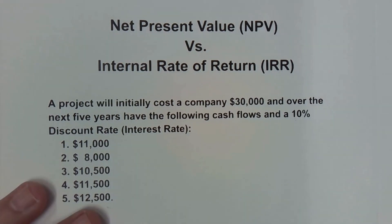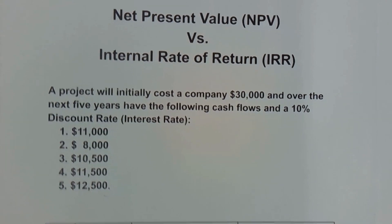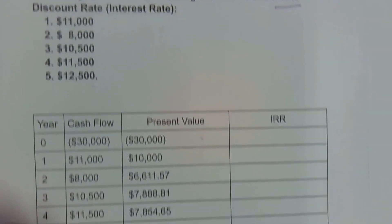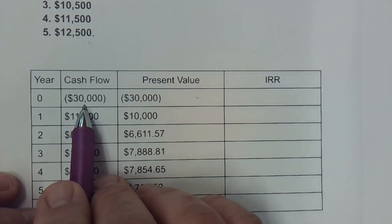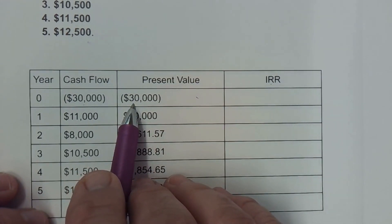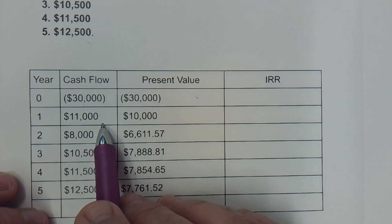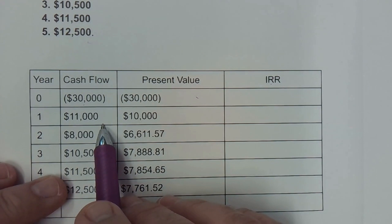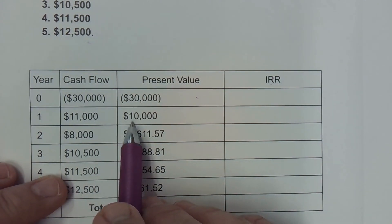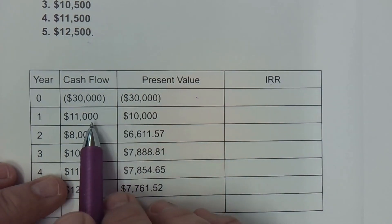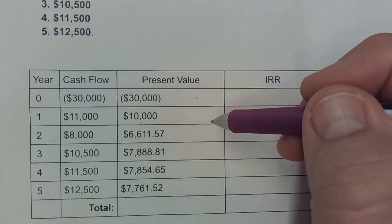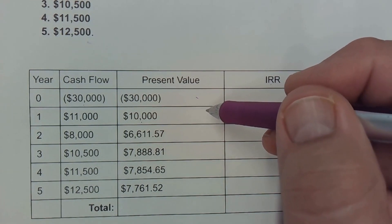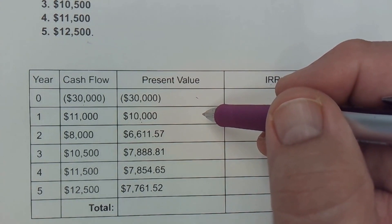Essentially what you're doing in net present value is using your discount rate — in this case 10% — and figuring out what the present value of those cash flows are. In year one, $30,000 was outlaid to invest in the project, so the present value of that is negative $30,000. The first year cash flow is expected to be $11,000, and because of a discount rate of 10%, the present value of that $11,000 is $10,000 today. That's because of the time value of money — a dollar today is worth more than a dollar a year from now due to inflation.